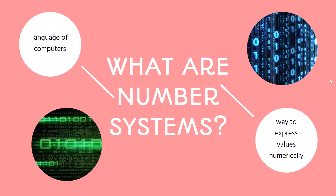Number systems are a way to express values numerically, and they're really helpful in computer science and cybersecurity because computers rely on number systems to operate. You might have thought of binary — binary is called the language of computers. The most common number system that we encounter is the decimal number system, where the digits zero through nine are used. Some other examples of number systems are binary, octal, hexadecimal, and base 64.